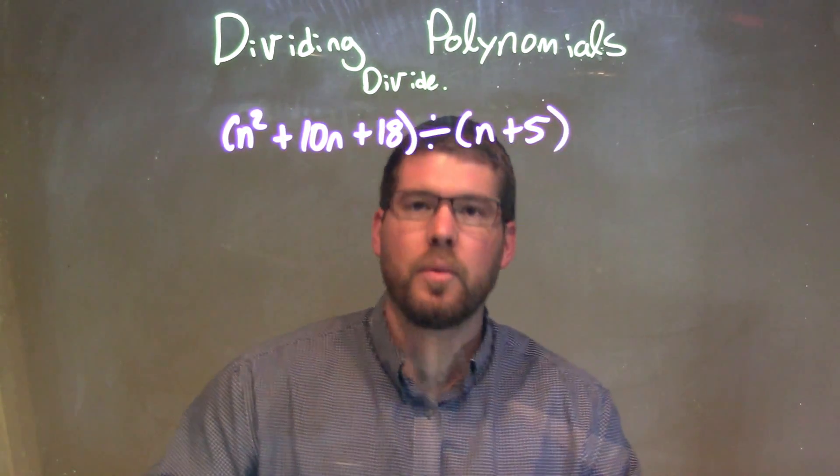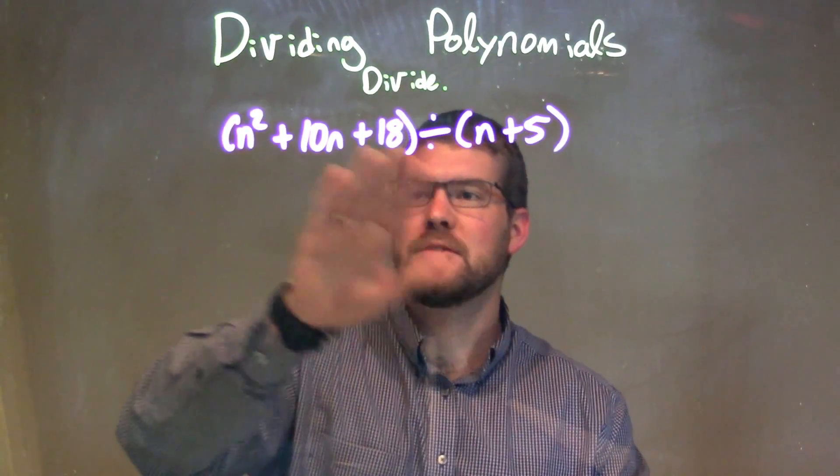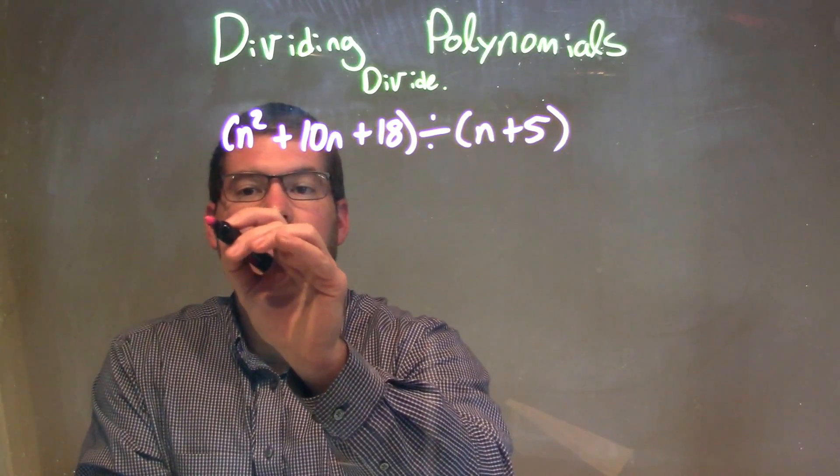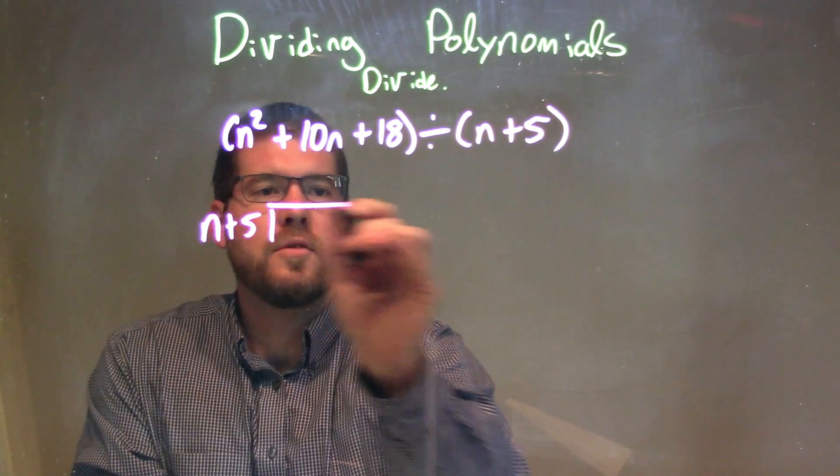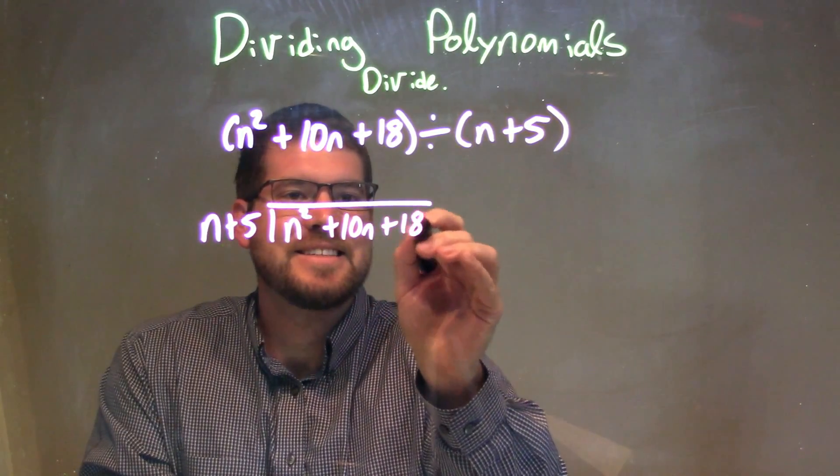We're going to put our divisor n plus 5 into our dividend n squared plus 10n plus 18. So we have n plus 5 goes into, let's do long division here, n squared plus 10n plus 18.